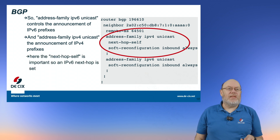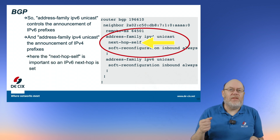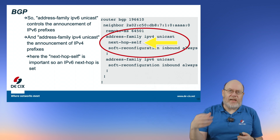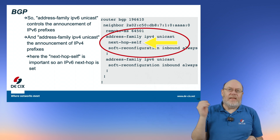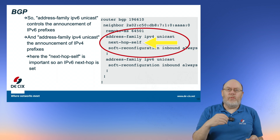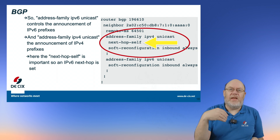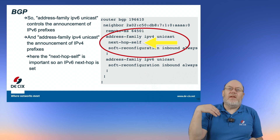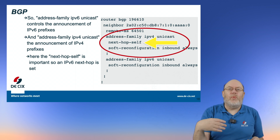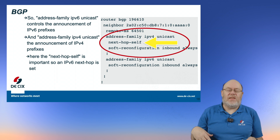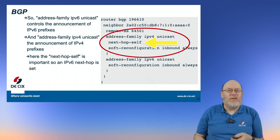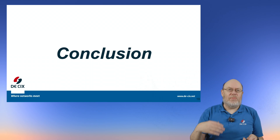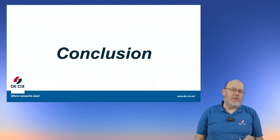The important part here is that you include 'next-hop self'. This ensures that the next-hop address being announced is the IPv6 address of that router. If you leave it out, the router announces it with an IPv4 address as a next-hop — and we might not have IPv4 addresses on that LAN. So this is the important part of how to configure it on Cisco.